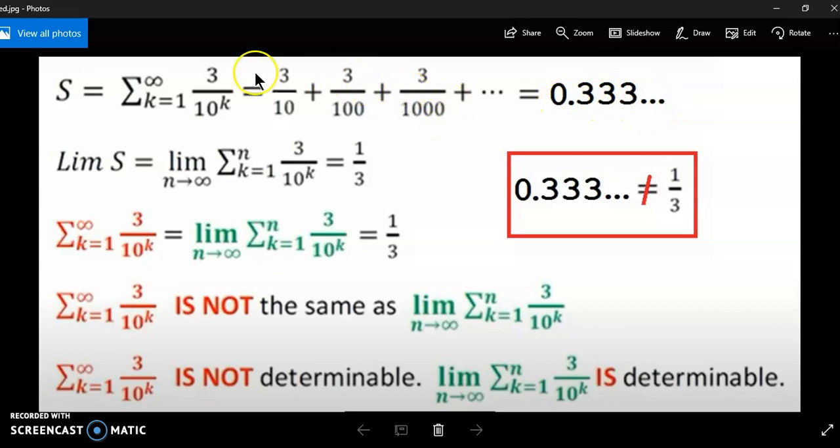This is just shorthand for the series. The limit of the series is one third. Why? Because this expression here, where I'm pointing my mouse, without the limit and without this, is called a partial sum. And if you take the limit of any partial sum, doesn't matter how large n becomes, it will always be a third. So I'm using this expression lim S to indicate this process here.